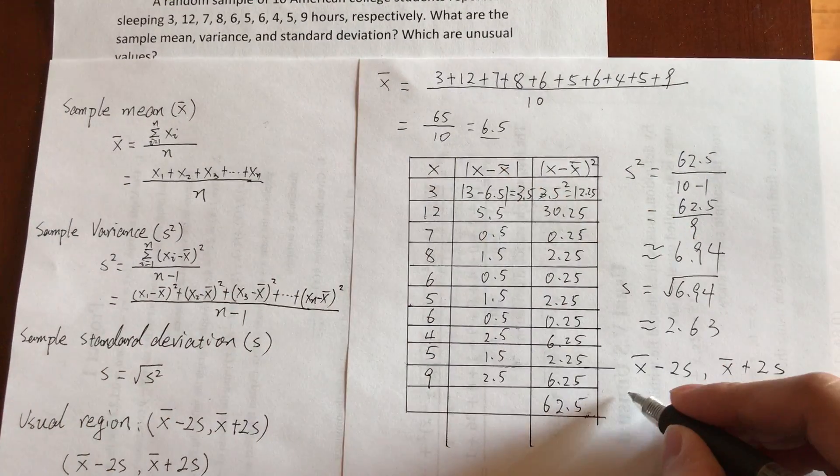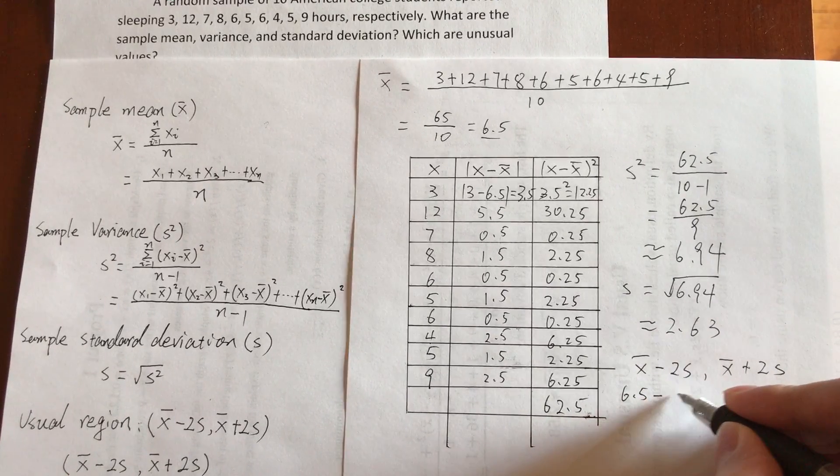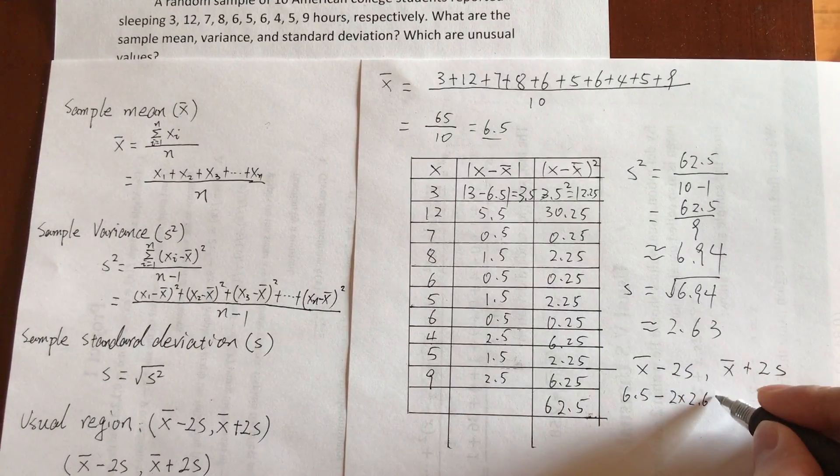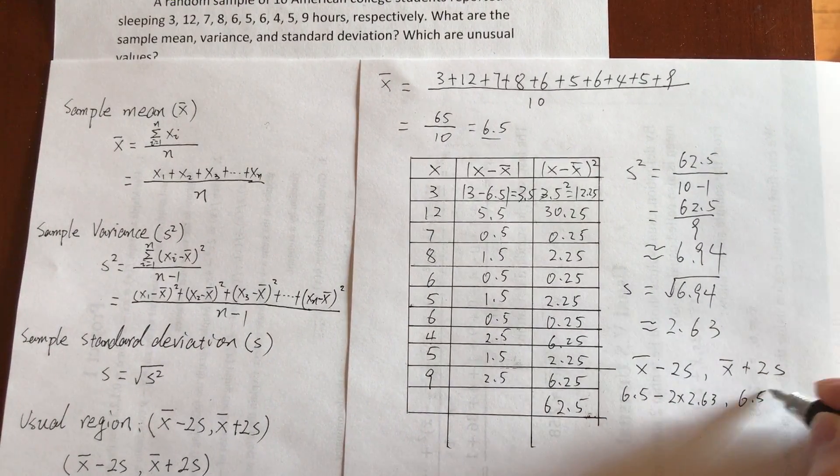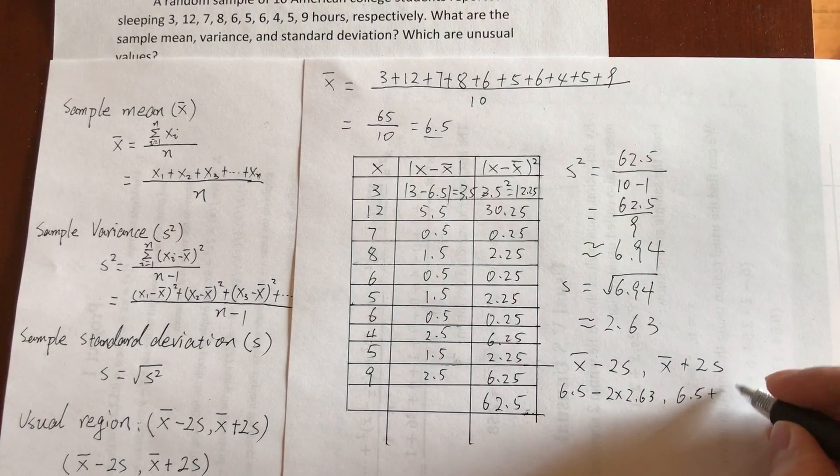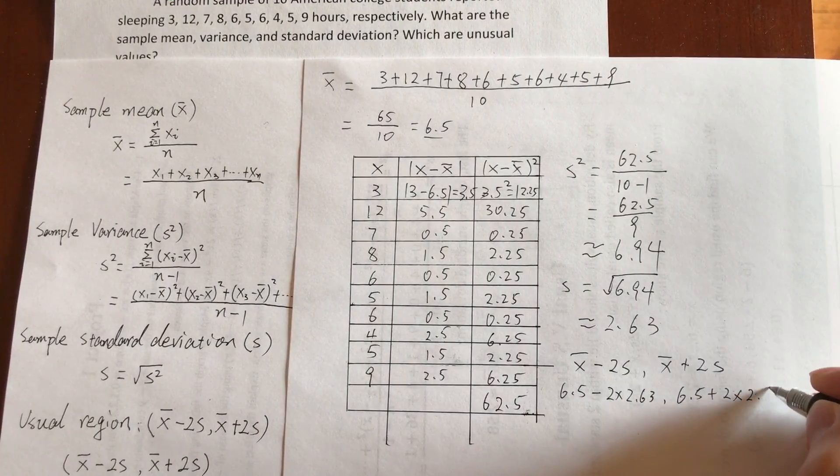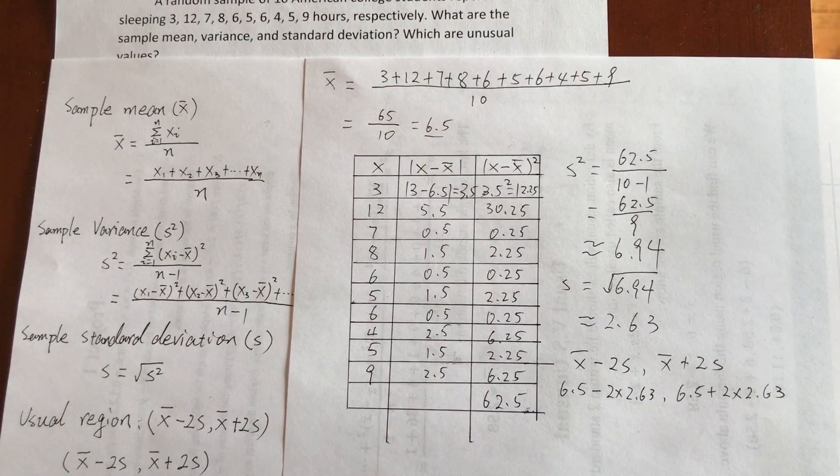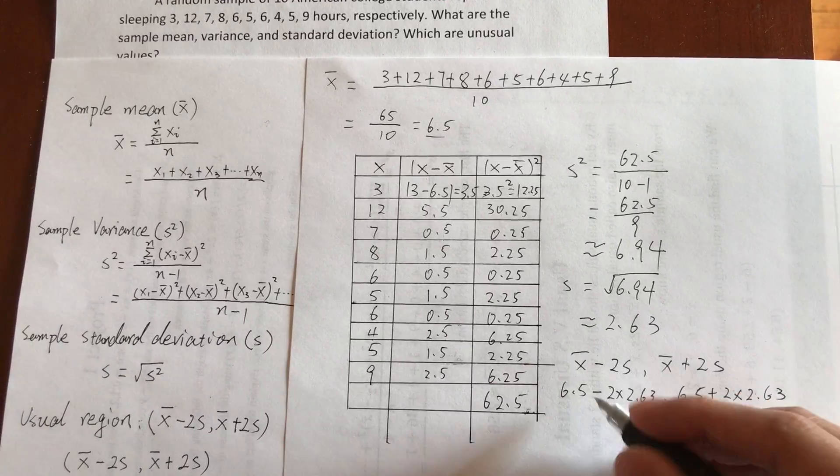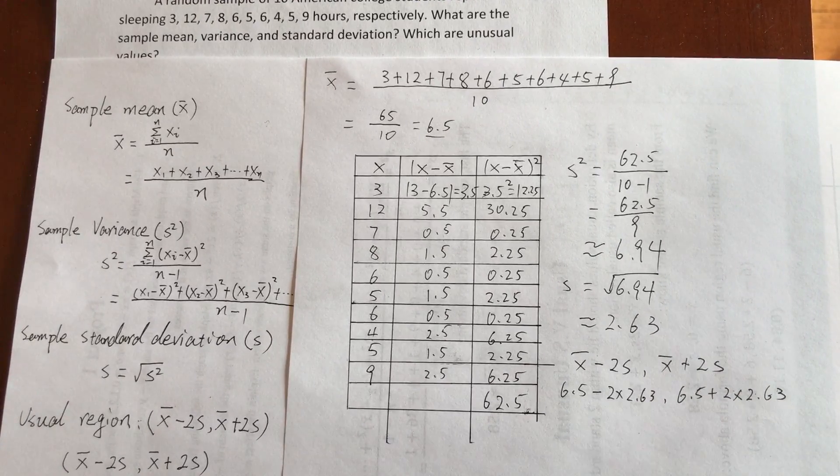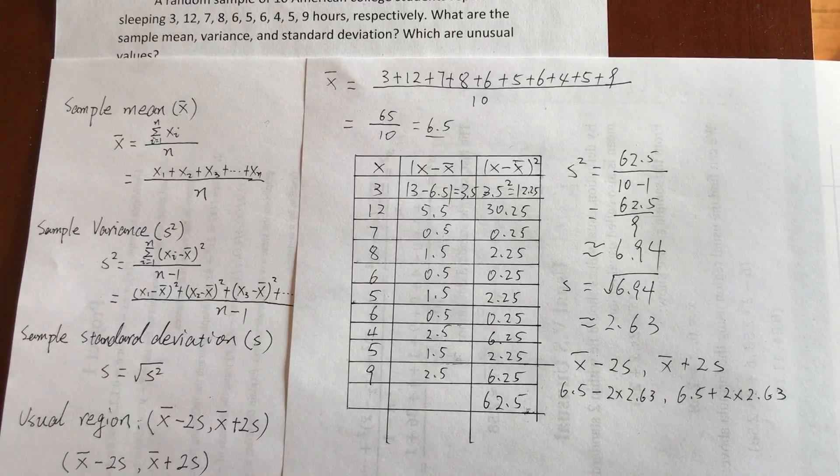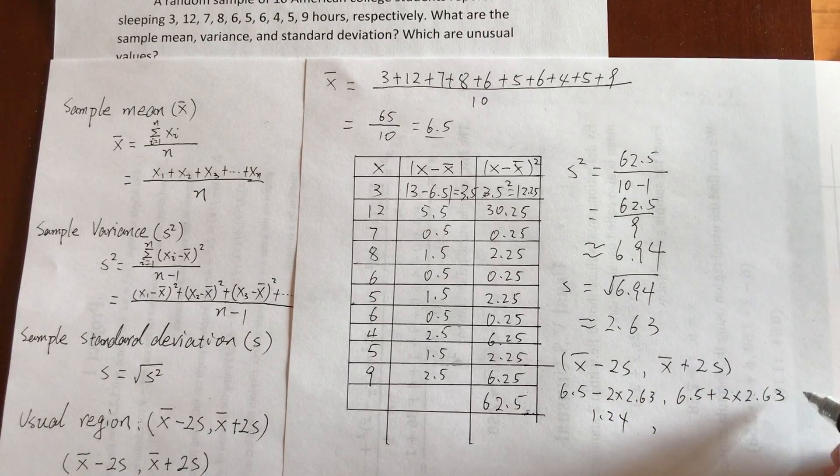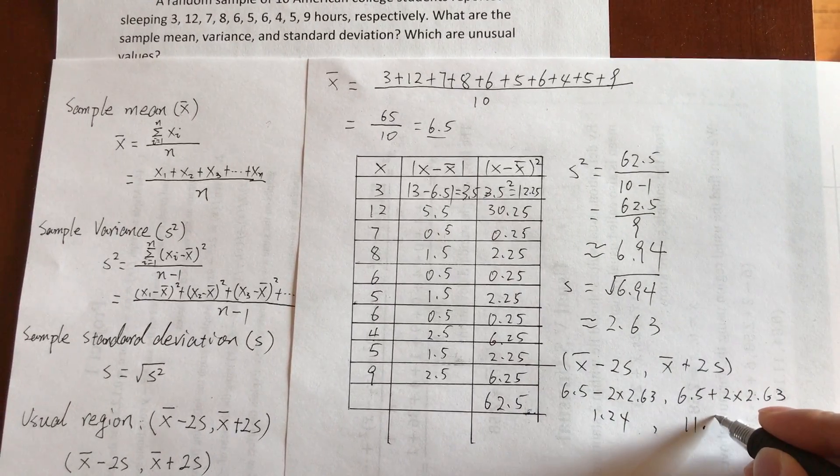X̄ is 6.5 minus 2 times the standard deviation, 2.63, and then X̄ plus 2 times 2.63. This equals 1.24 to 11.76.